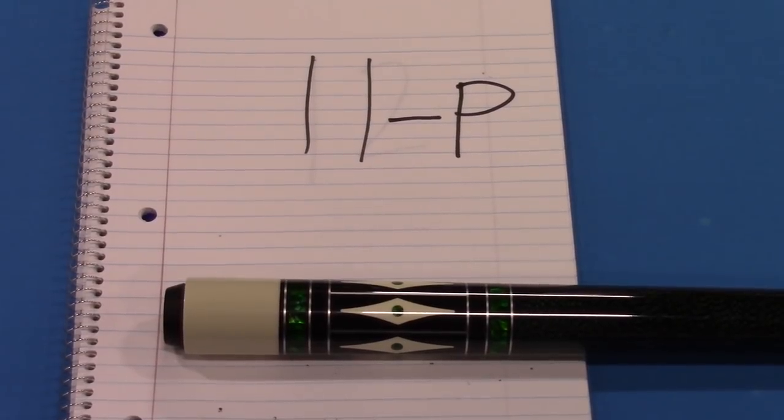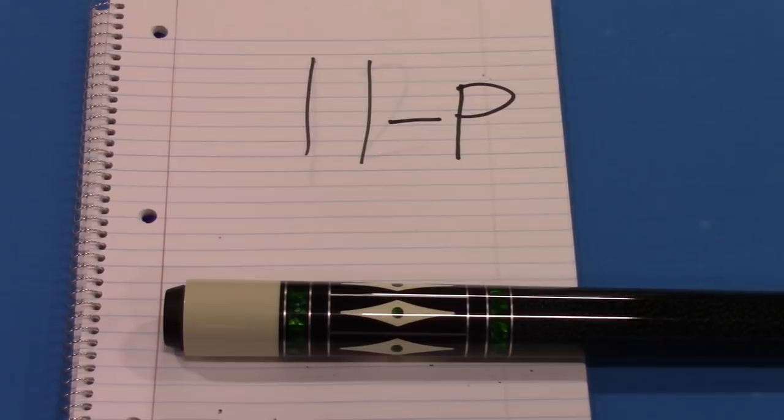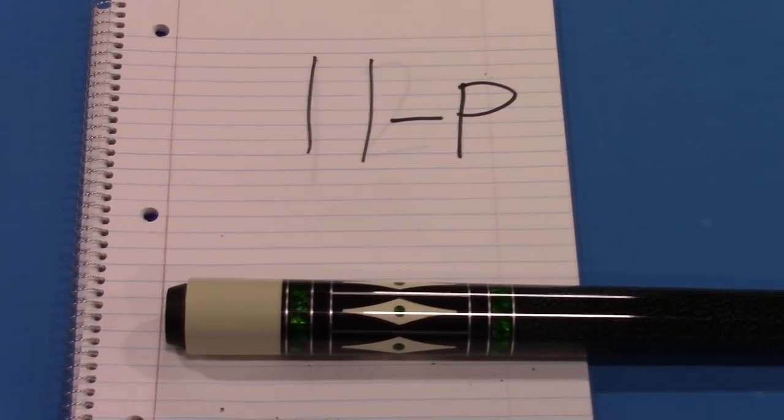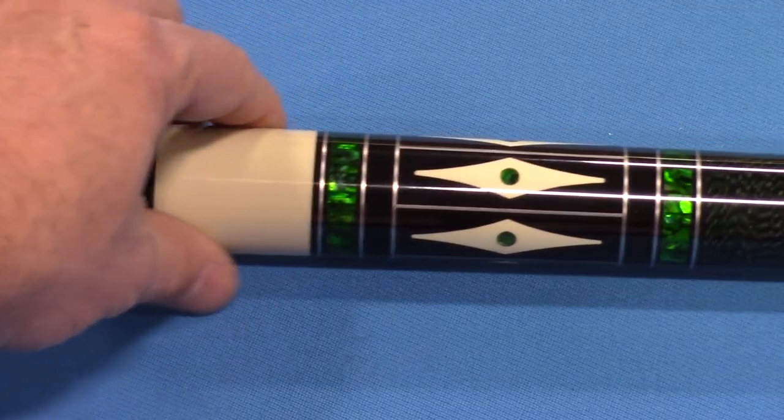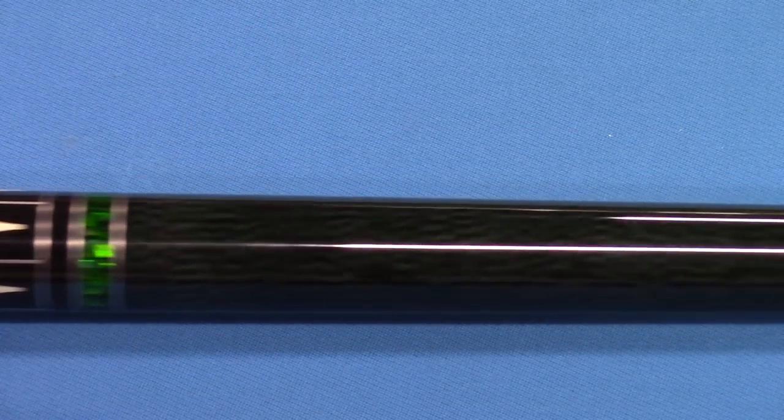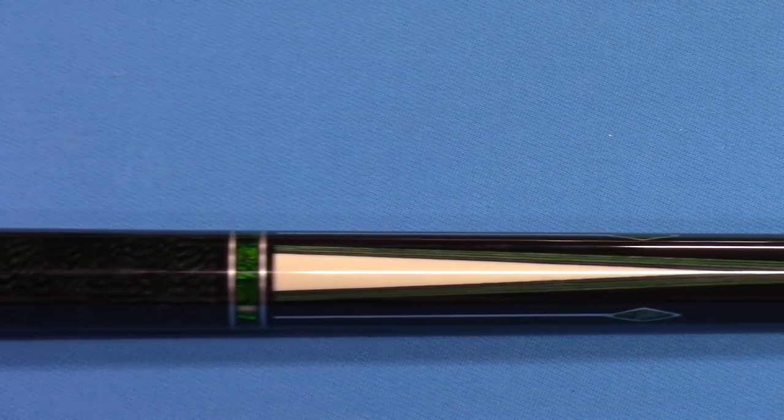And this is a points cue here. We have a four-point cue. It's all ebony. Green, emerald green, and ivory-colored inlays. Of course, we have silver rings on that. And the smooth handle. Go into these super nice points.